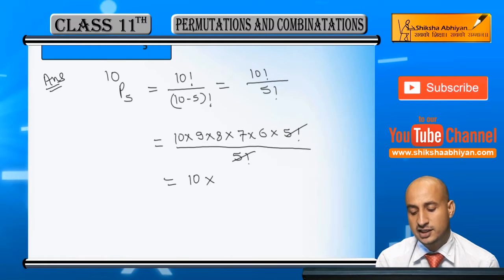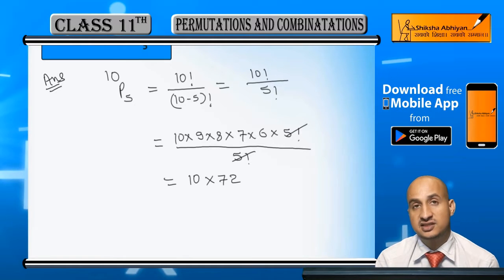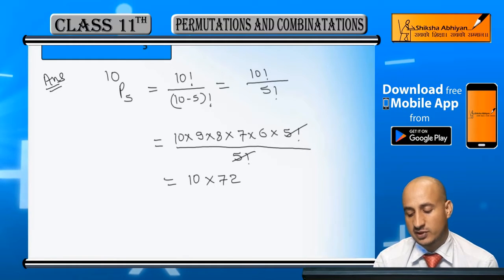This will be 10, 9 into 8 is 72, and 6 into 7 will be 42.